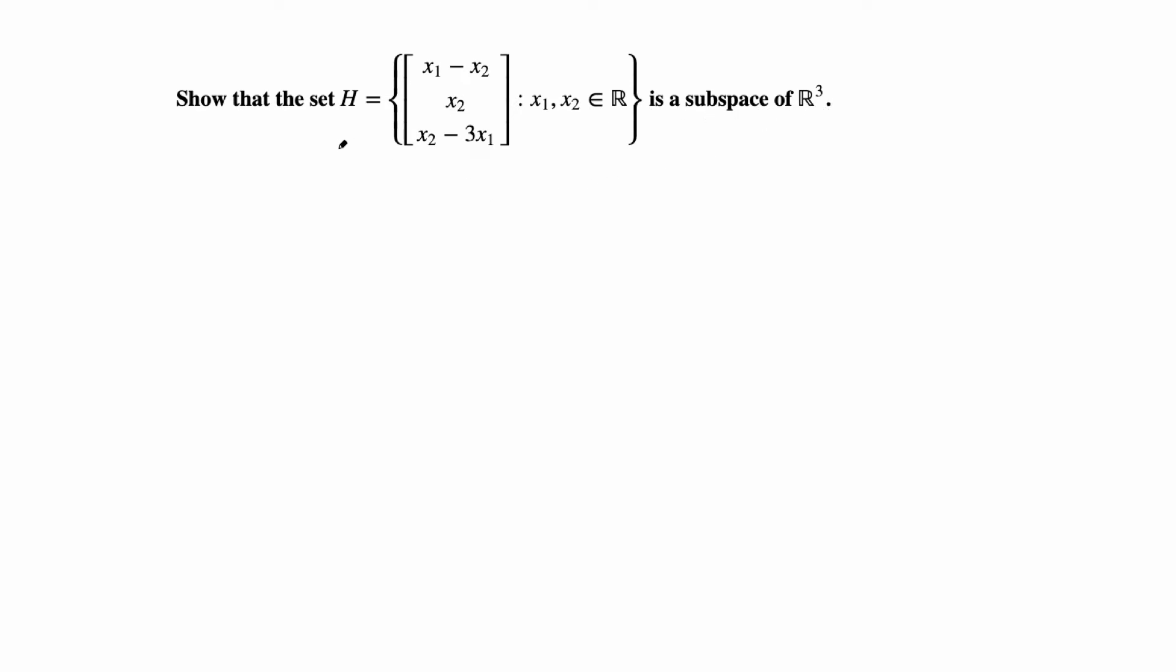Instead of proving the three conditions needed for a subspace, we can use a theorem we learned in class. In R³, if we have two vectors v1, v2, and we write the set of all linear combinations, that's called span v1, v2. This is always a subspace of R³.